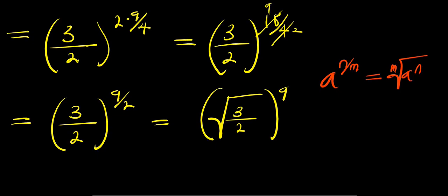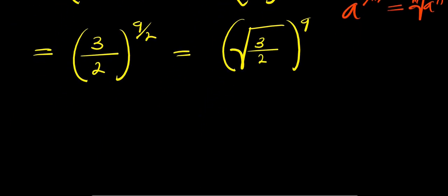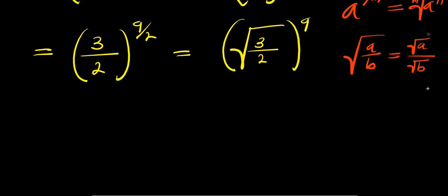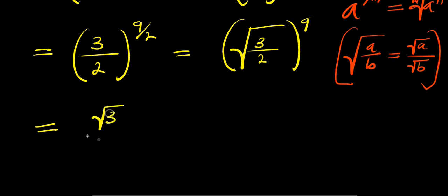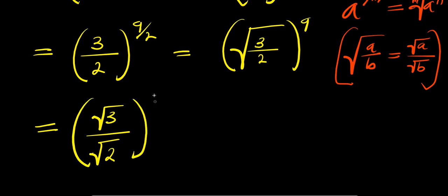Now, the next thing we can do is consider this other identity: if you have the square root of a divided by b, this equals the square root of a divided by the square root of b. So we are simply going to have square root of 3 divided by square root of 2, to the power of 9.